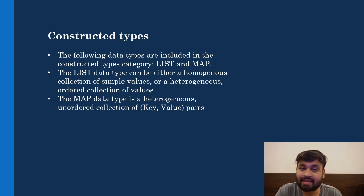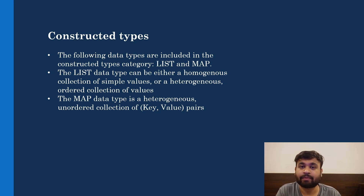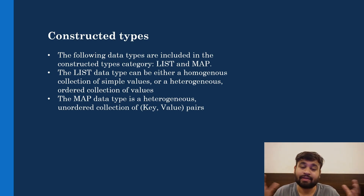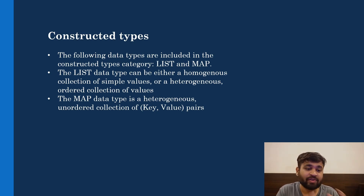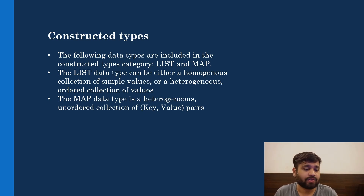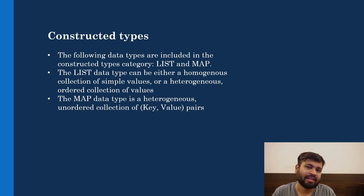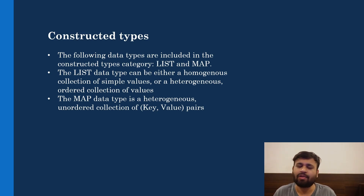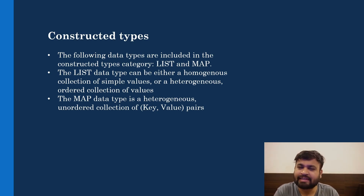At last we have the constructed types. Constructed types are the list and map in Neo4j Cypher. The list data type can be a homogeneous collection of simple values (all strings, or all integers) or a heterogeneous ordered collection of values. The map data type is a heterogeneous unordered collection of key-value pairs — you can think of it as a dictionary where data is stored as key-value pairs, similar to JSON format.